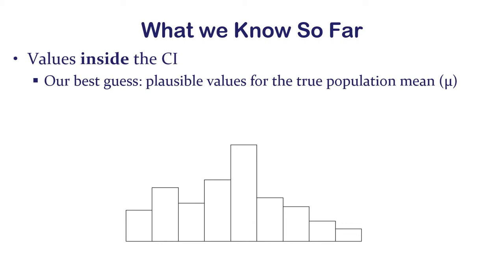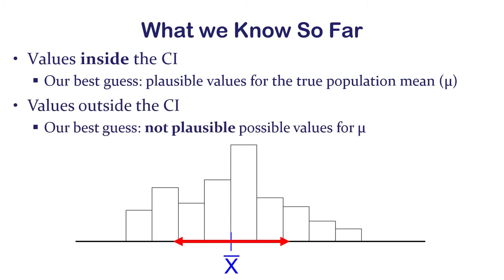Based on the only evidence we have, everything inside this confidence interval — between these two values — is plausible as a possible value for the true population mean.